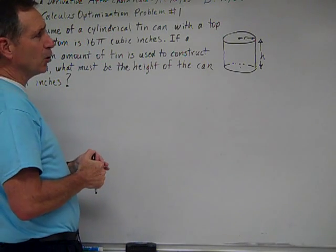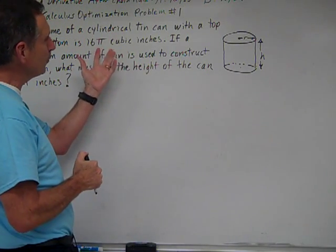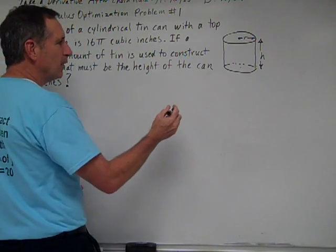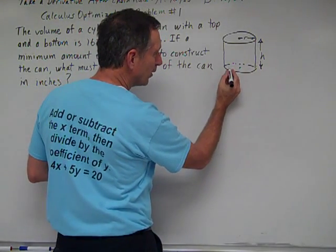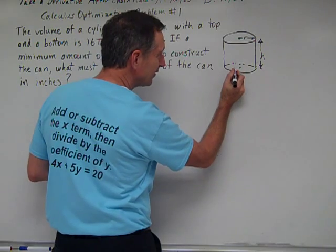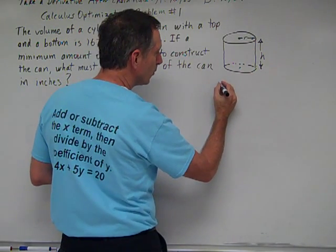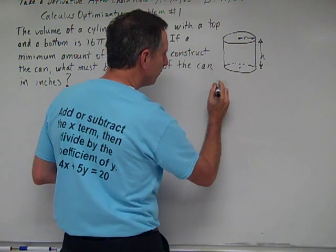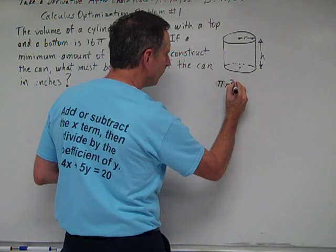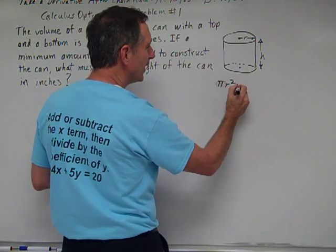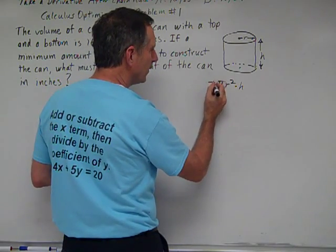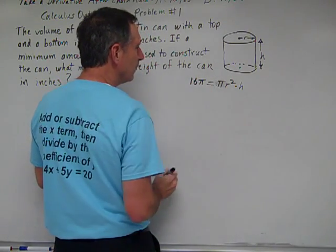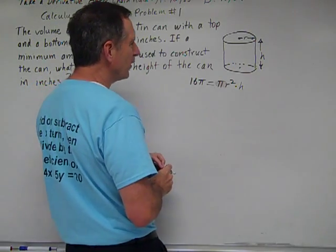We're going to look at the equations. We have the volume equation for a can. The volume of a solid is the base times the height. So the base is πr², the area of a circle, times the height. And we know that equals 16π, which is the volume of the can.